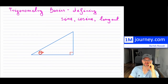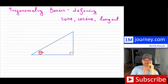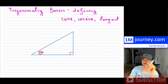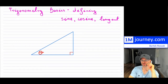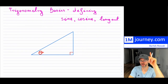Trigonometry basics continued. Let's try to define sine, cosine, and tangent. In similar triangles, we have shown that we basically have certain ratios between the sides that are equivalent to each other. I'll put up a link above to that introduction for you.